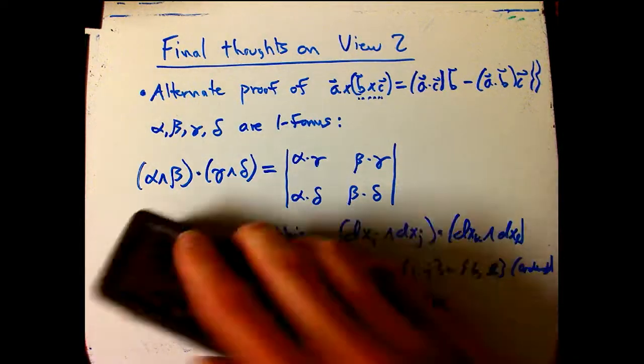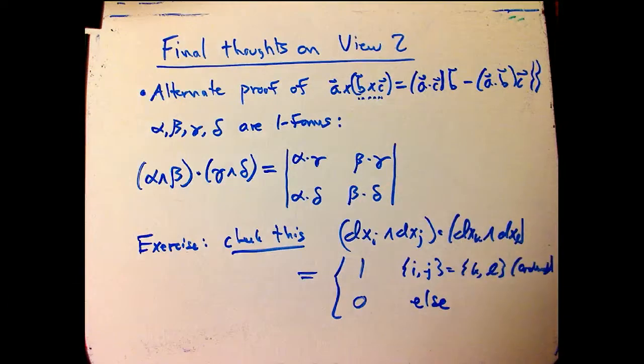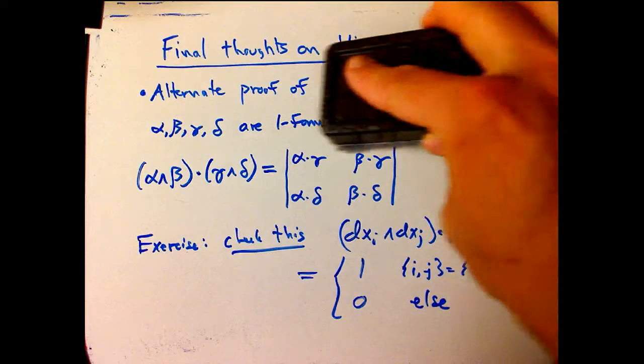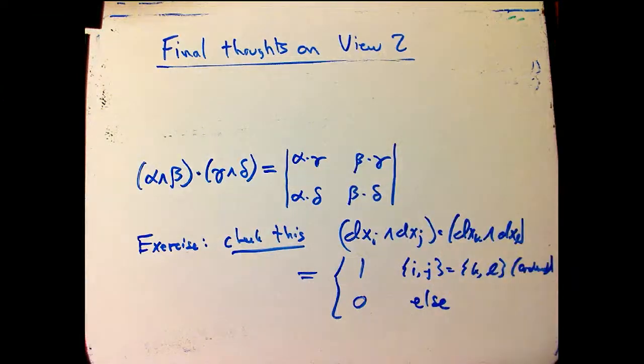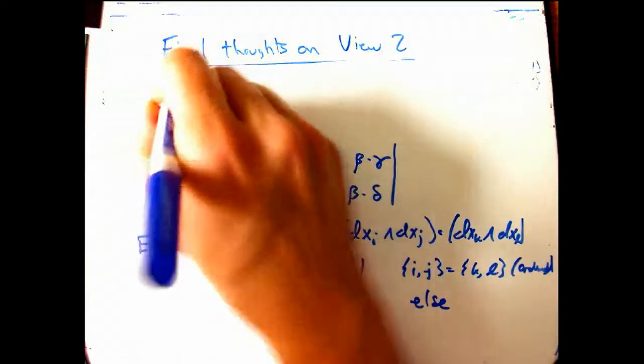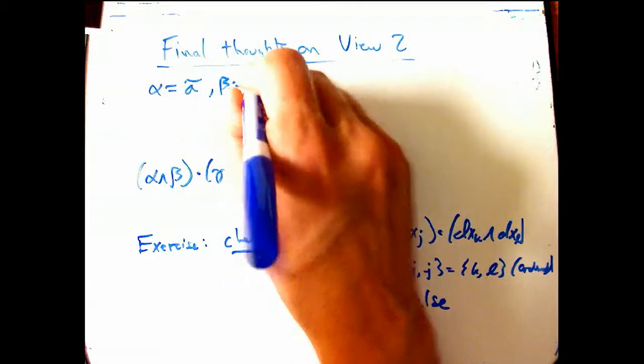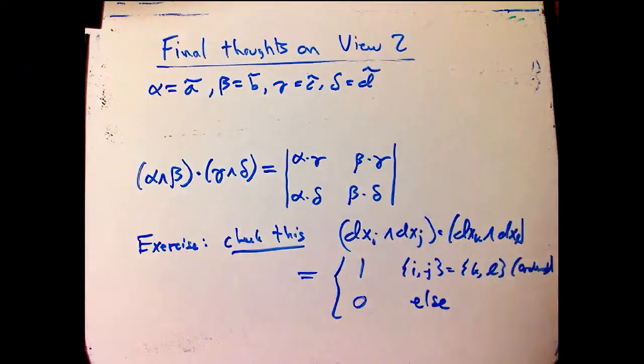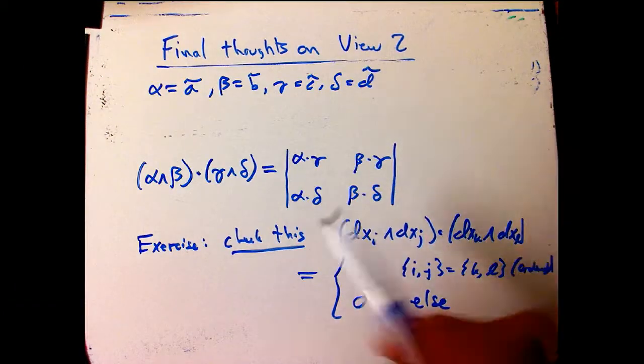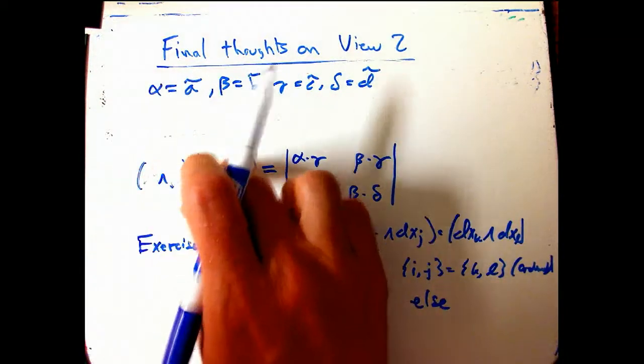Now, I just want to show that that gives us a very slick proof of the vector triple product identity. Because what we're going to do is we're just going to realize that if alpha is some vector A tilde, and beta is vector B tilde, gamma is C tilde, and delta is D tilde, then the way we define dot products on one forms, we can just say, okay.